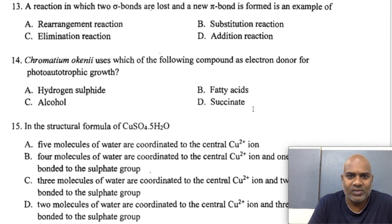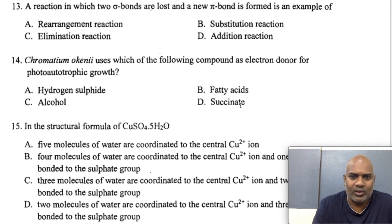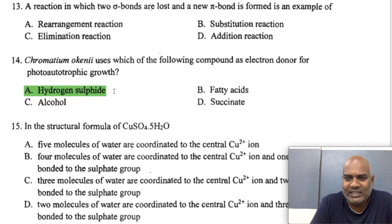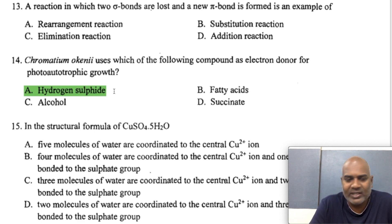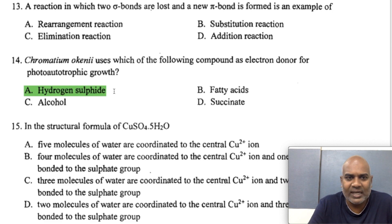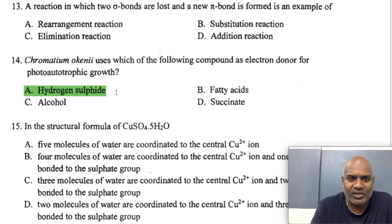Chromatium okenii uses which compound as an electron donor for photoautotrophic growth? The answer is hydrogen sulfide. It belongs to the anoxygenic photosynthetic bacteria and is a gram-negative purple sulfur bacterium. In anoxygenic photosynthesis, water cannot donate electrons; instead, hydrogen sulfide donates electrons, resulting in the production of elemental sulfur.